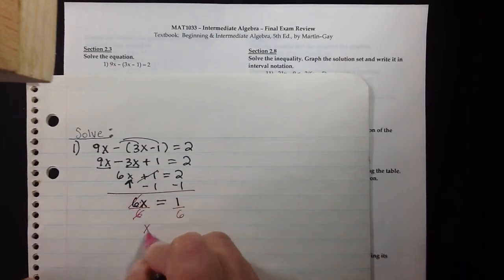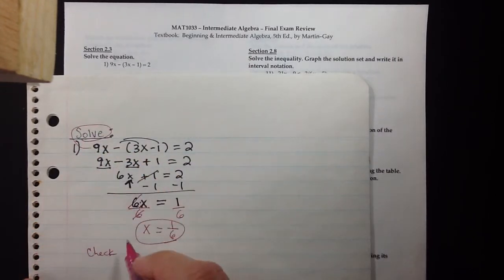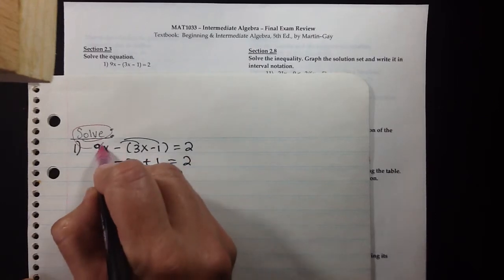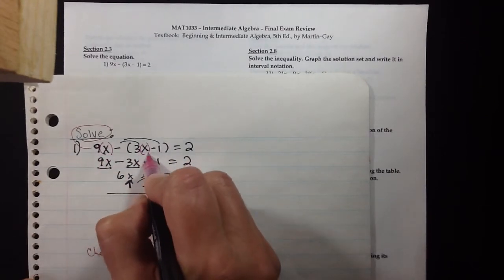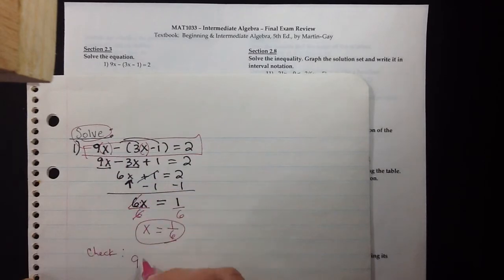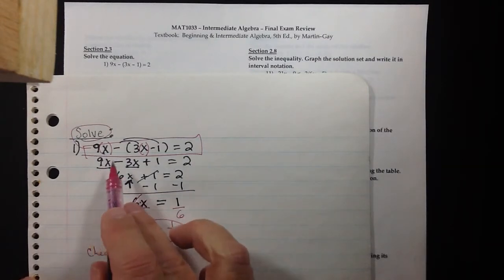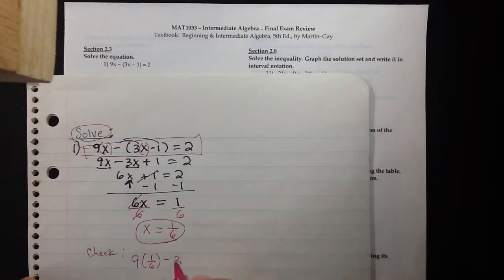If you have extra time, you could actually check your answer whenever you solve. The way you check is by putting parentheses around each and every x in the original equation, then erasing the x's and replacing them with the claimed answer. So the original problem was 9x minus (3x minus 1) and we claim that equals 2.